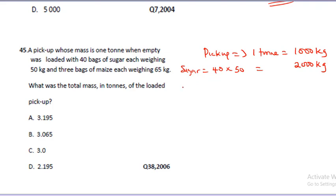Then the maize was 65 times 3, so that's going to give us 195 kg. It's asking us what was the total mass. We are considering also the mass of the lorry because it says what was the total mass in tons of the loaded pickup. So now we can sum up - we'll get 3195 kg.